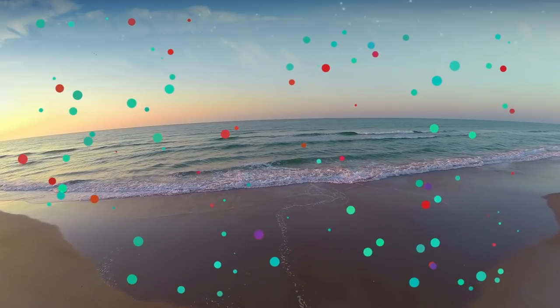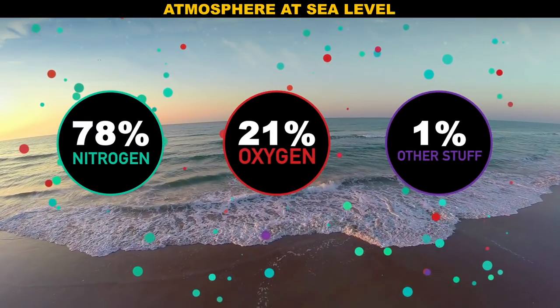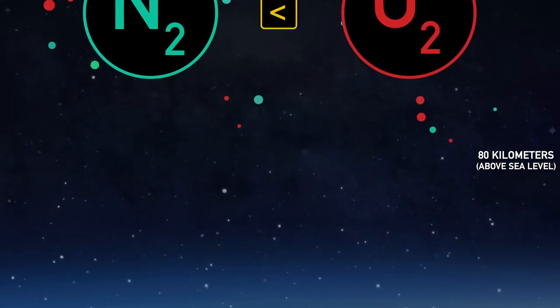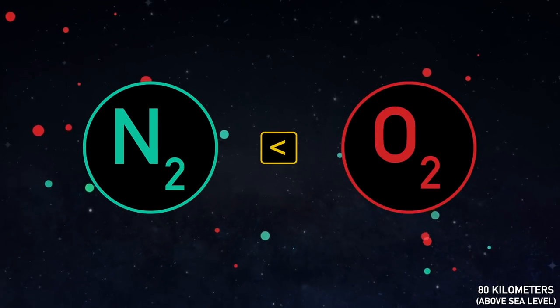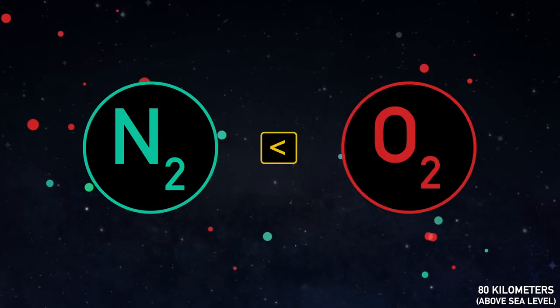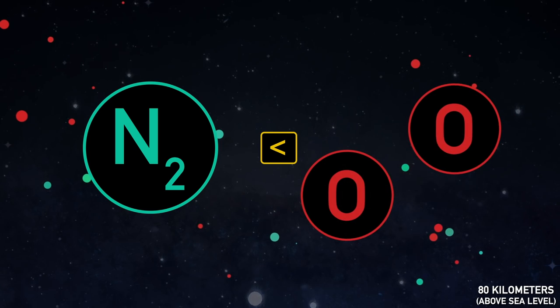In our upper atmosphere, about 80 kilometers and up, there's actually more oxygen than nitrogen. Three, at those high altitudes, UV light from the sun actually splits oxygen molecules into oxygen atoms.